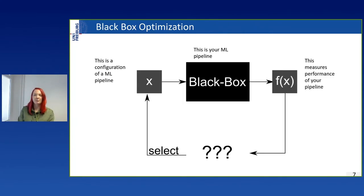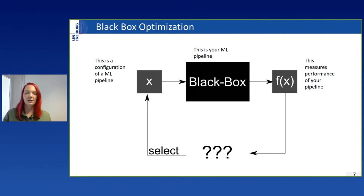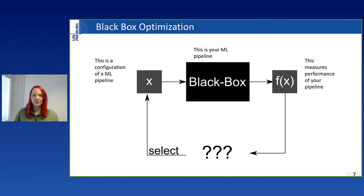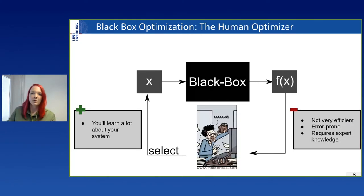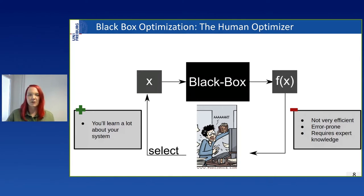The answer is black box optimization. It's called black box because we have no gradients and assume we don't know anything that helps us find the best configuration. The only mode of interaction is querying it with a configuration X of a machine learning pipeline and observing F of X, the pipeline's performance. Since time and resources are finite, we want to execute this loop as few times as possible and select configurations to evaluate in a smart way. The most obvious approach could be a human optimizer, also called grad student descent.